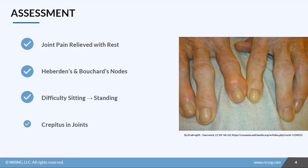Most of your patients will be seen by you for other reasons, but they'll have osteoarthritis, so we need to know what to look for. First, they will have joint pain that is relieved with rest. This is one thing that separates it from rheumatoid arthritis — in osteoarthritis the pain tends to be relieved with rest, whereas pain in RA is continuous.